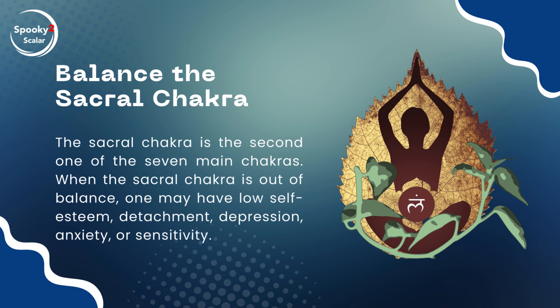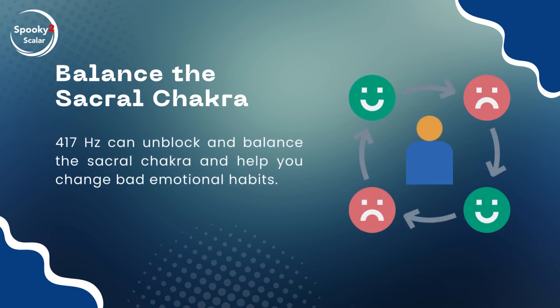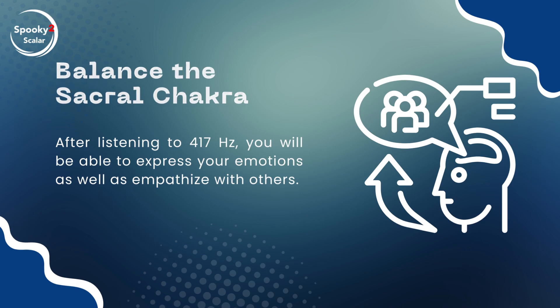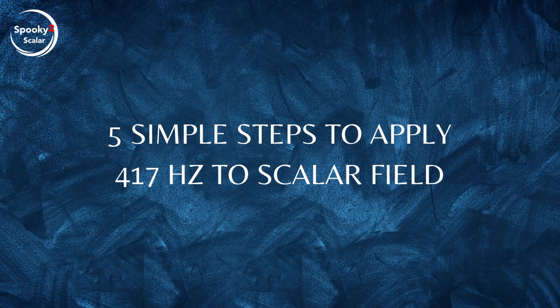Balance the Sacral Chakra. The Sacral Chakra is the second of the seven main chakras, and it is the center of sexual energy and emotions. When the Sacral Chakra is out of balance, one may have low self-esteem, detachment, depression, anxiety, or sensitivity. 417 Hz can unblock and balance the Sacral Chakra, help you change bad emotional habits, and enable you to express your emotions as well as empathize with others.